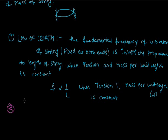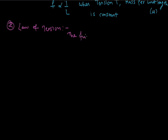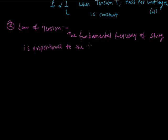The second law is the law of tension. The fundamental frequency of a string is proportional to the square root of its tension. That means, frequency F is directly proportional to the square root of tension T, when the length L and mass per unit length mu is constant.